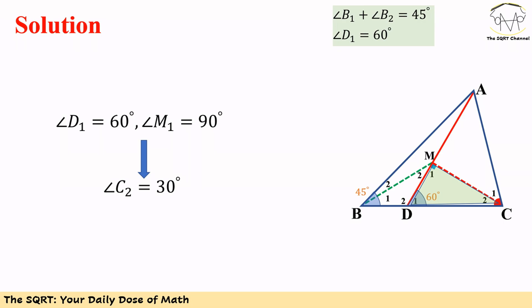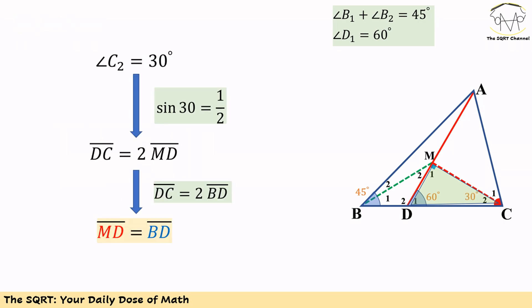In this right triangle, we have M1 equals 90 degrees, D1 equals 60 degrees, and as a result C2 is going to be 30 degrees. Now in triangle CMD, C2 is 30 degrees.